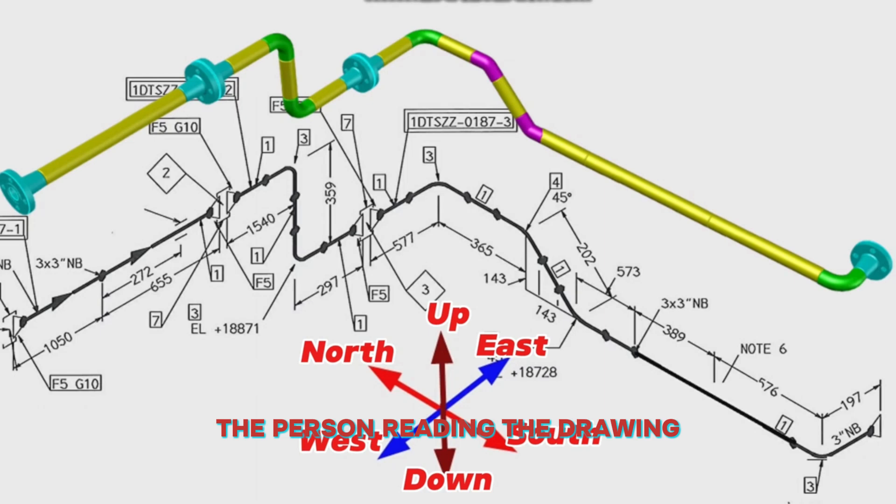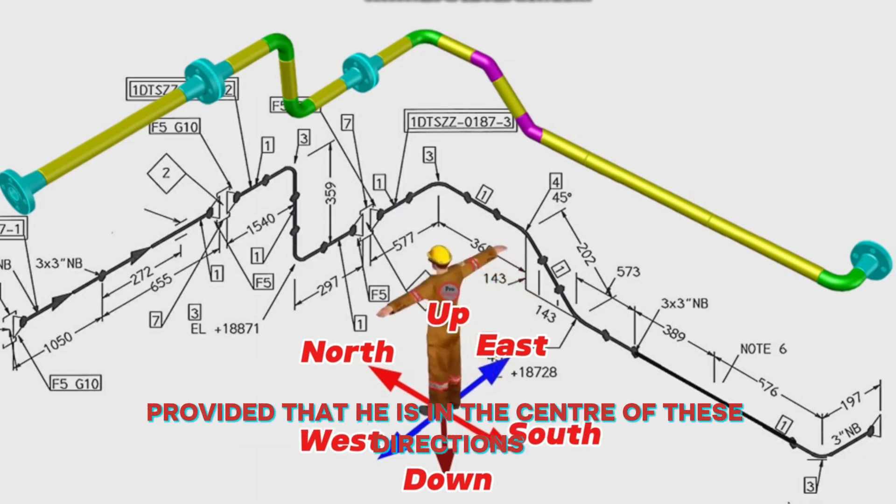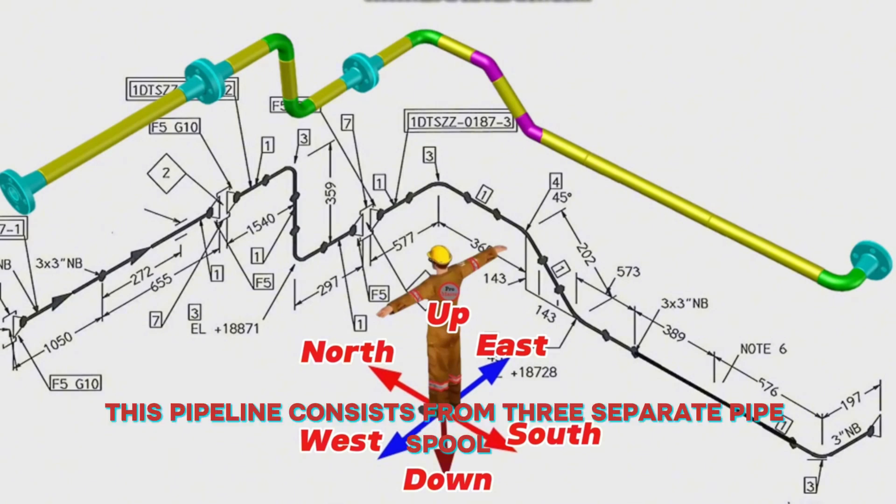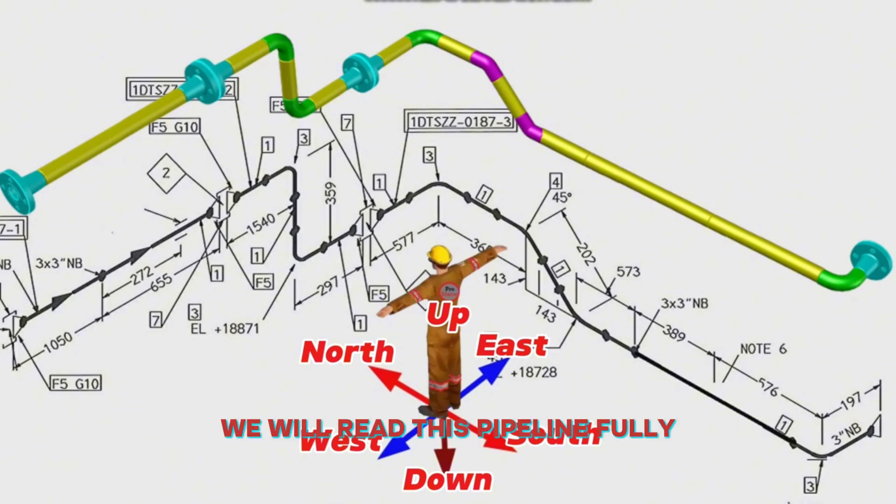The person reading the drawing should imagine himself facing north, provided that he is in the center of these directions. This pipeline consists of three separate pipe spools. We will read this pipeline fully.